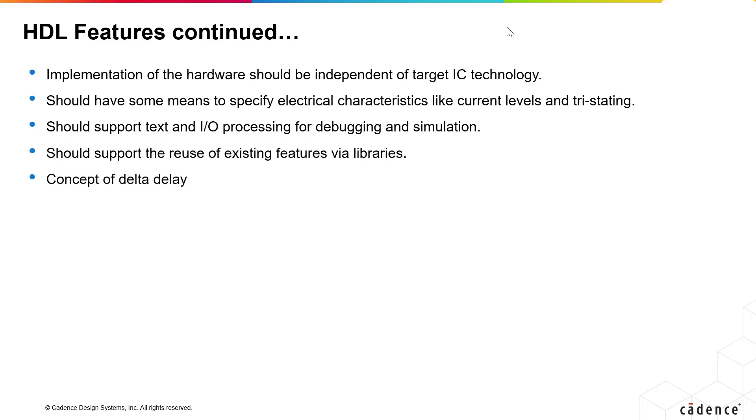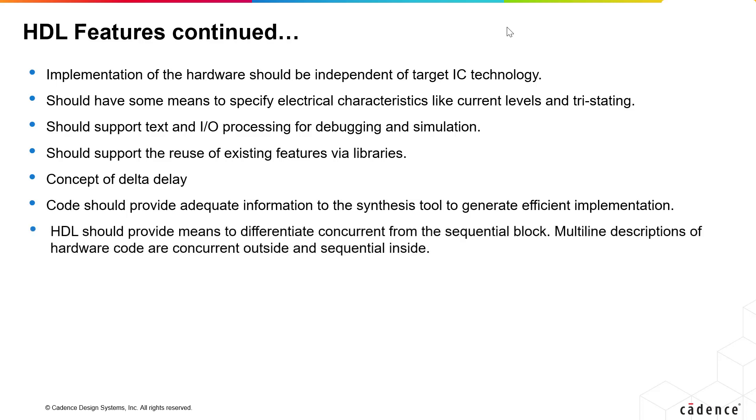Time ordering of signals or events are important in HDL. We need to know which event occurred first and which next within a specific time interval to enable this zero delay is modeled as delta delay. Events are ordered and then delta equal to zero is applied. HDL code should provide adequate information to the synthesis tool to generate efficient implementation. It should provide some means to differentiate concurrent from sequential block. Multi-line descriptions of hardware code are concurrent outside and sequential inside. Most of the sequential designs are sensitive and hence there must be some means to model this. Finally, code must be both human and machine readable.